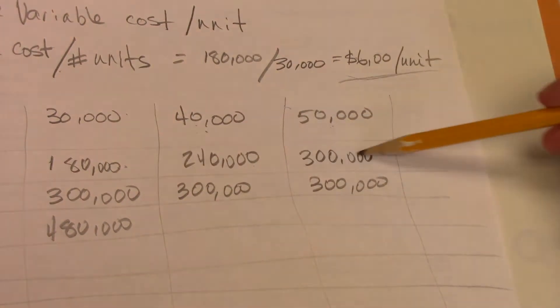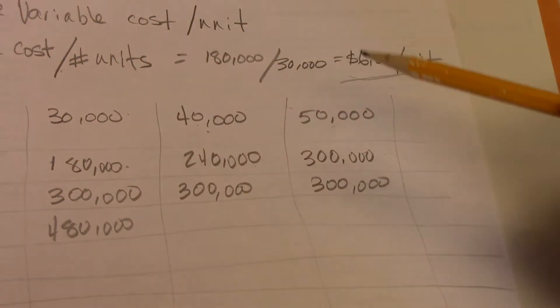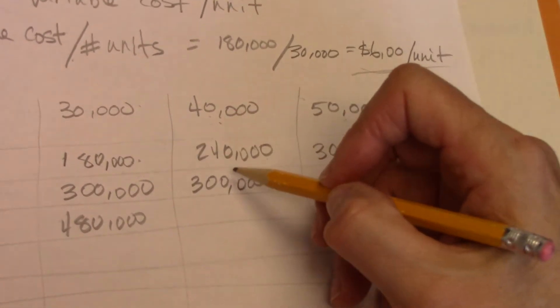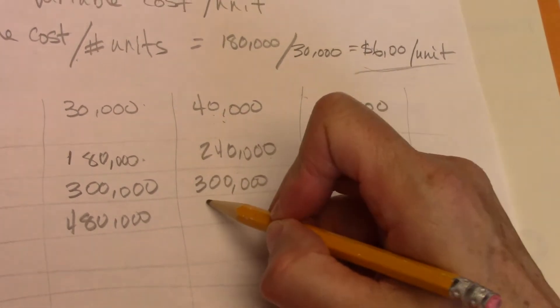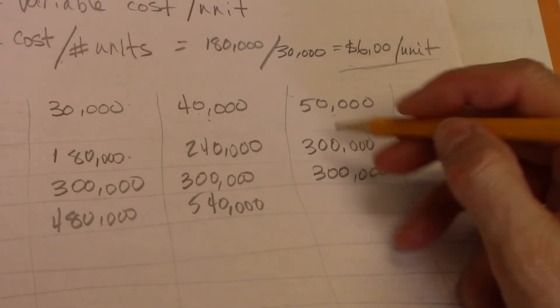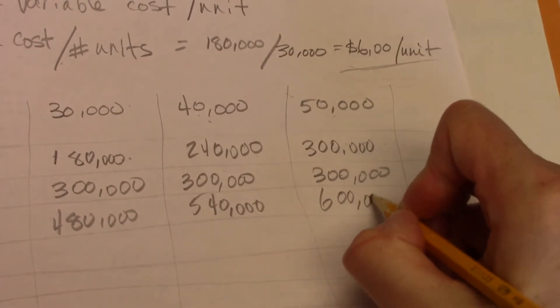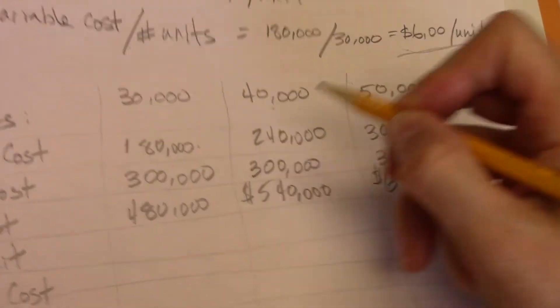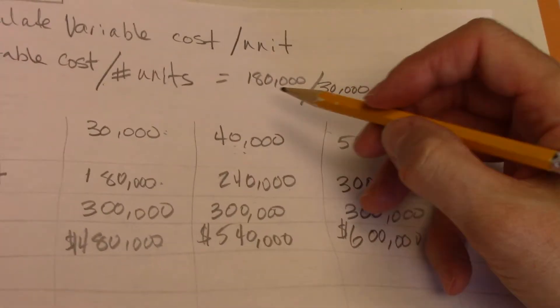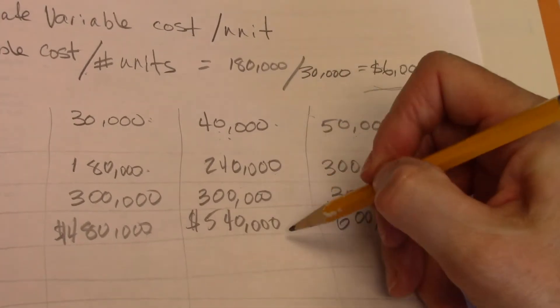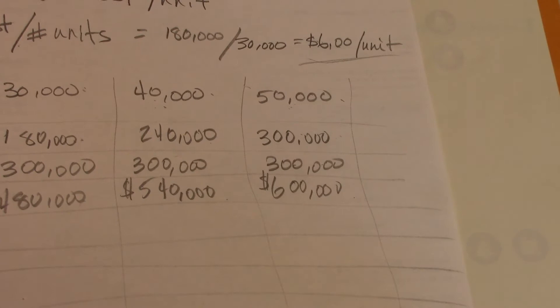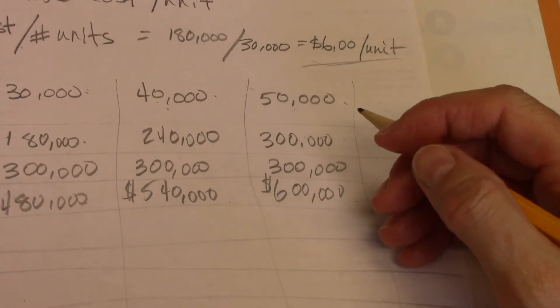So my variable total costs are here. My fixed total costs are here. Now I can figure out the rest of my total costs. So $240,000 plus $300,000 gives me a total cost of $540,000. $300,000 and $300,000 is $600,000. So my total costs, if I produce $30,000, it's going to cost $480,000. If I produce $40,000, it's $540,000. If I produce $50,000, it's $600,000.